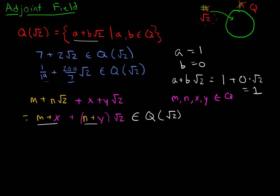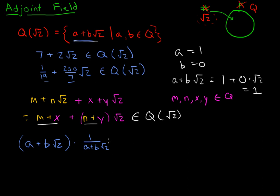You could say the multiplicative inverse of a + b√2 is just 1 over (a + b√2). And you're probably saying that doesn't look like something of this form. Well, we could just multiply by the conjugate: multiply by (a − b√2) over (a − b√2).